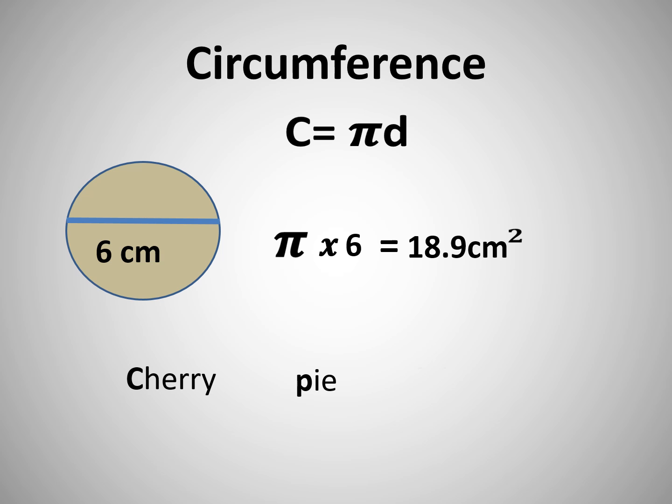Pi times 6 is 18.9 cm, and we always put a square on our answer when we're doing area. And there you see cherry pie delicious, circumference equals pi times diameter.